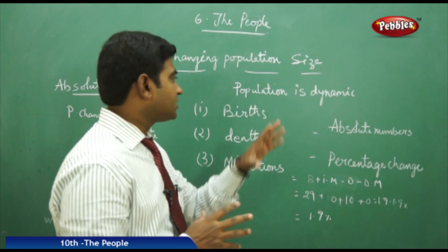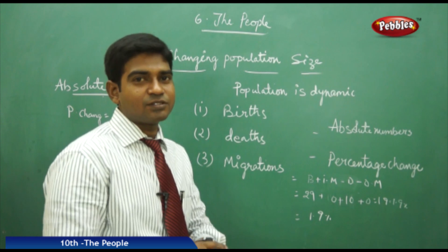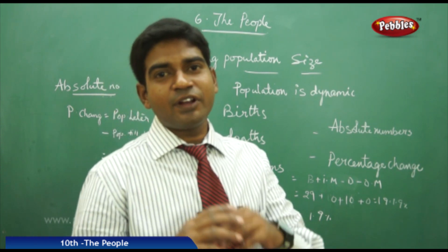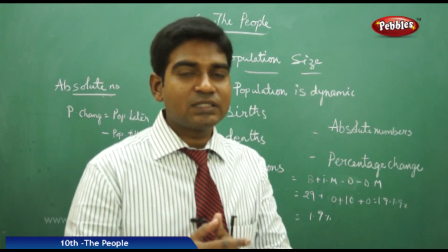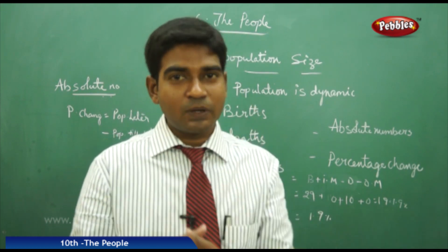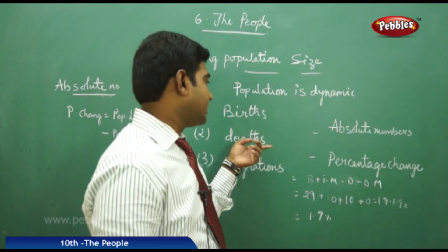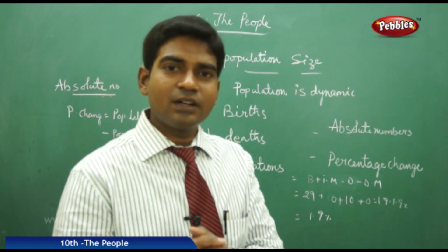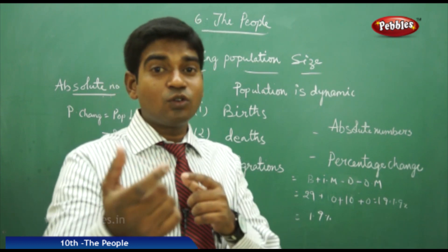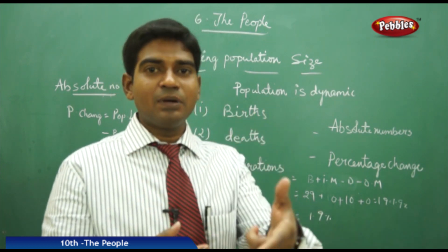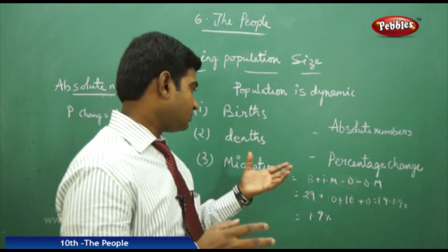The population of any area can be determined by three major factors: births, deaths, and migrations. The number of births per 1000 in a given year keeps adding to the population — a positive dynamic. Deaths, whether due to accidents or health issues, subtract from the population — a negative dynamic. So births minus deaths keeps changing the population dynamics.